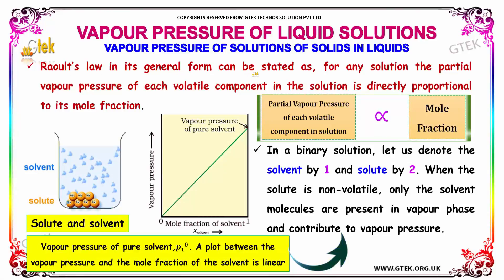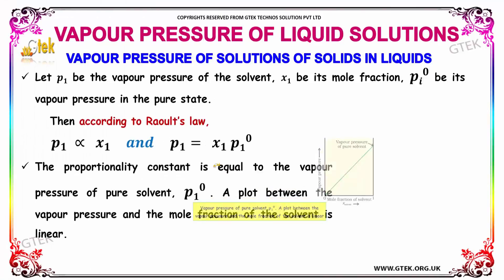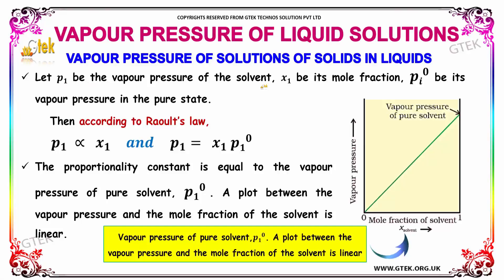Raoult's law in its general form can be stated as: for any solution, the partial vapor pressure of each volatile compound in the solution is directly proportional to its mole fraction. In a binary solution, let us denote the solvent by 1 and solute by 2. When the solute is non-volatile, only the solvent molecules are present in the vapor phase and contribute to the vapor pressure. Let p1 be the vapor pressure of the solvent and x1 be its mole fraction, and p1° be its vapor pressure in the pure state. Thus, according to Raoult's law, p1 is directly proportional to x1, and p1 = x1 · p1°. The proportionality constant is equal to the vapor pressure of the pure solvent p1°. A plot between the vapor pressure and the mole fraction of the solvent is linear.